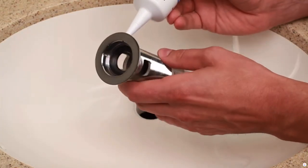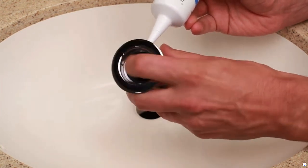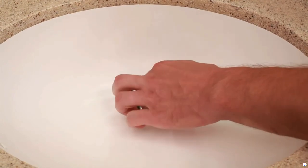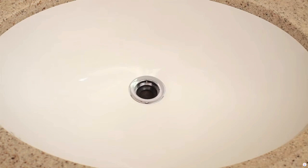Apply a continuous bead of silicone to the underside of the lav drain rim. Insert the one-piece tube into the sink drain hole with the pivot ball socket opening facing the wall.